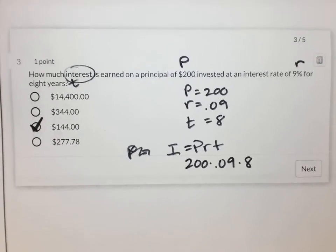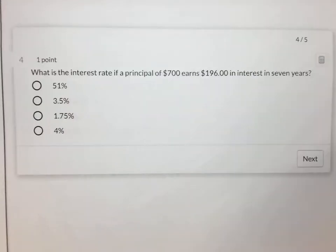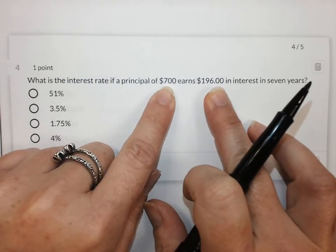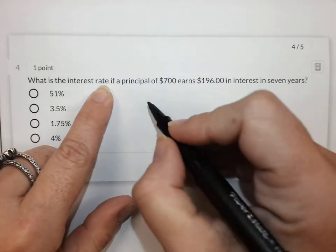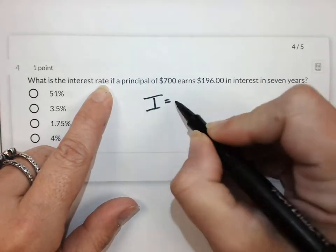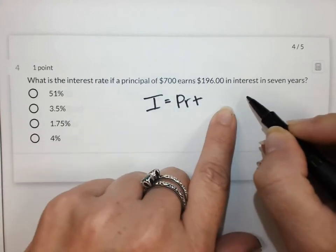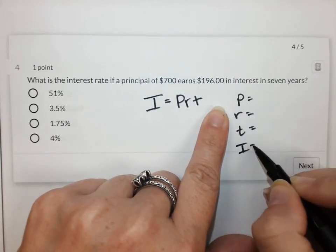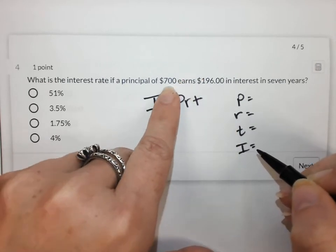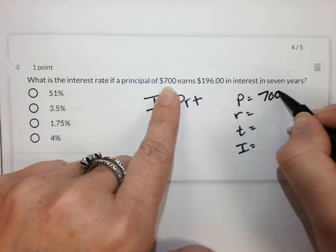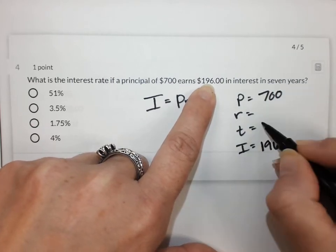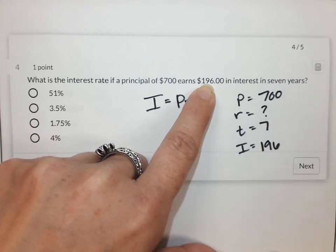Alright. Moving on to number four. Number four says, what is the interest rate if the principal of 700 earns 196 in seven years? They're asking me for my rate. So something that really helps me is to list these over here so I can just go plug them in. So my principal was 700. It earns 196 dollars in interest for seven years. And we're looking for the rate.